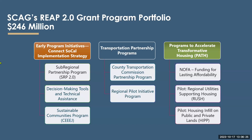Here is an overview of the three main funding streams under the REAP 2.0 program: the early planning initiatives, Connect SoCal implementation strategies, the transportation partnership programs, and the program to accelerate transformative housing, otherwise known as PATH. A lot of these programs have already been opened up and received a great deal of applications from our member jurisdictions.